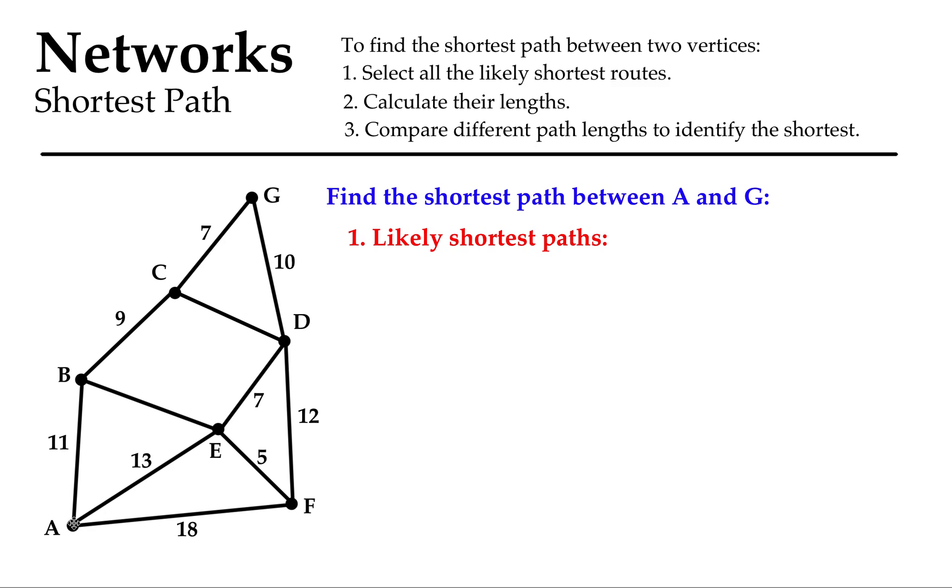When we're selecting the likely shortest path, I don't reckon it's going to include F here, because we can go from A to B or A to E and I think we're getting closer and closer to G rather than going the long way around. So if you think a route is the long way around, don't choose it as a likely shortest path, you'll be wasting your time.